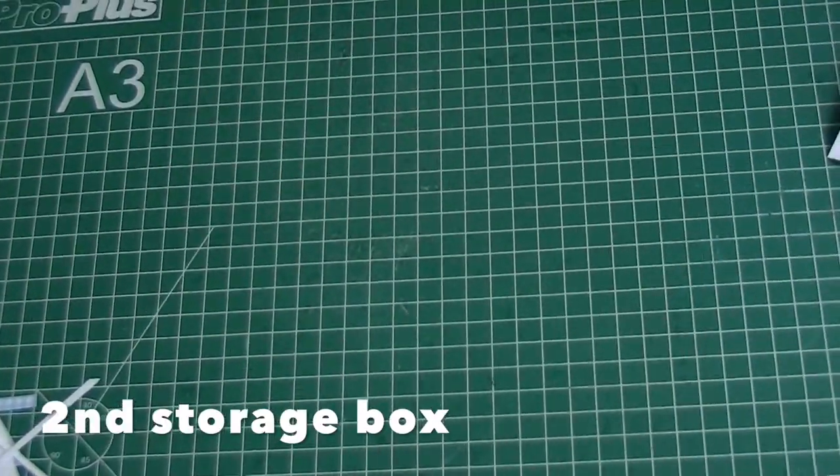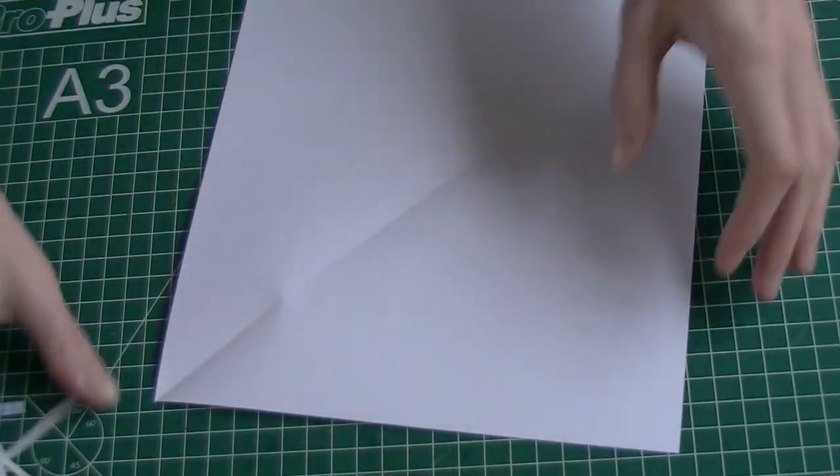You will need a square piece of paper. Start by folding the paper twice in half.